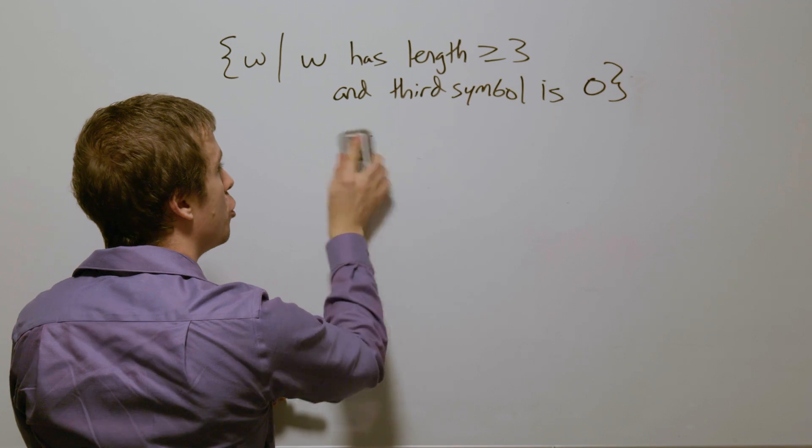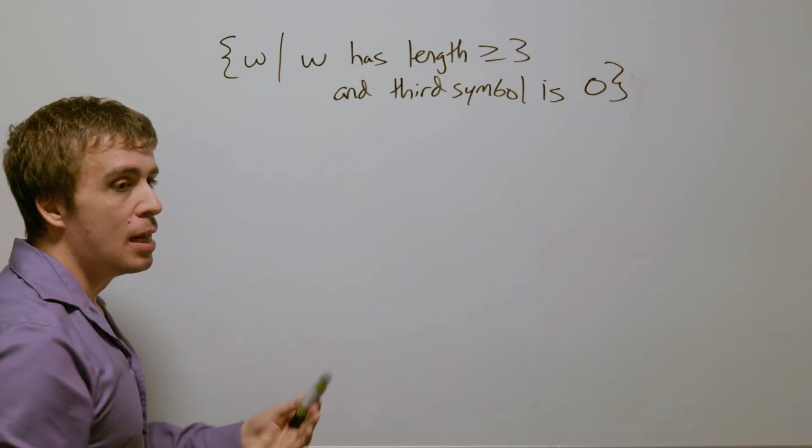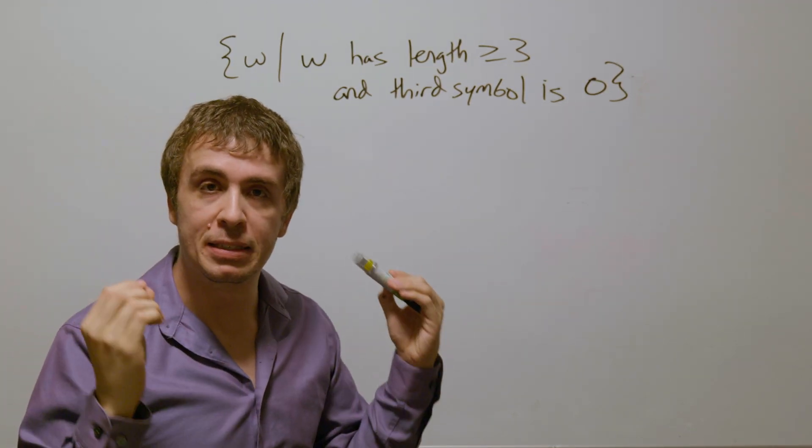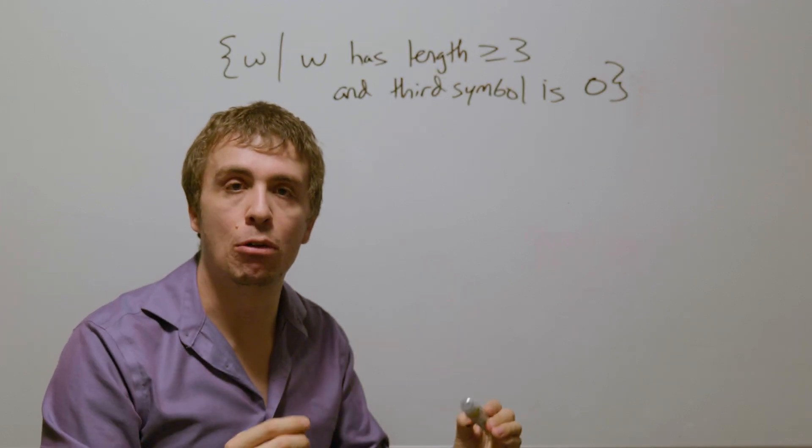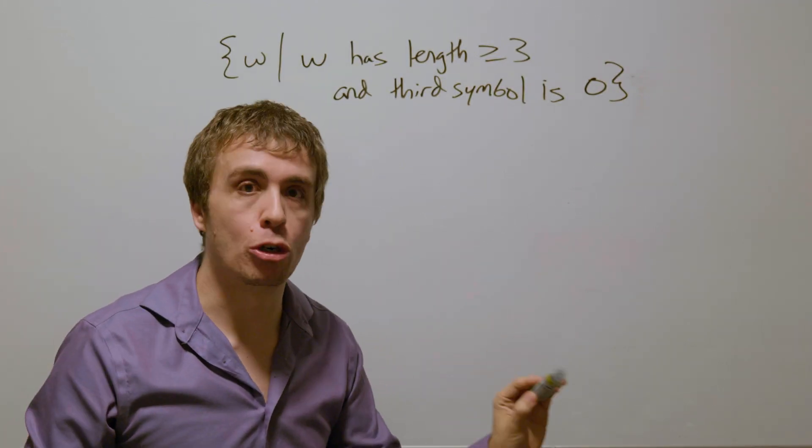So how are we going to build a DFA for this? Let's focus on the conditions of being in the language and add all missing transitions later.